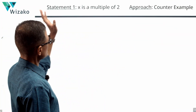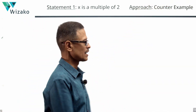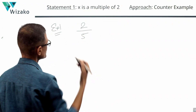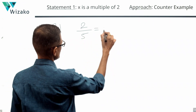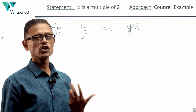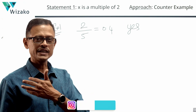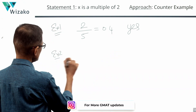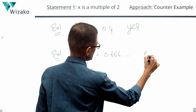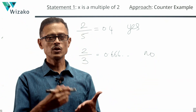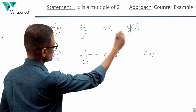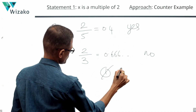Evaluating Statement 1: x is a multiple of 2. Example 1: take x = 2, y = 5. Then 2/5 = 0.4, which is certainly a terminating decimal — answer is yes. For a counterexample, keep x = 2 and change y to 3. Then 2/3 = 0.6666, which is a non-terminating decimal. So x/y could be terminating (2/5) or non-terminating (2/3). We have a counterexample — sometimes yes, sometimes no. Statement 1 is not sufficient. Rule out answer options A and D.